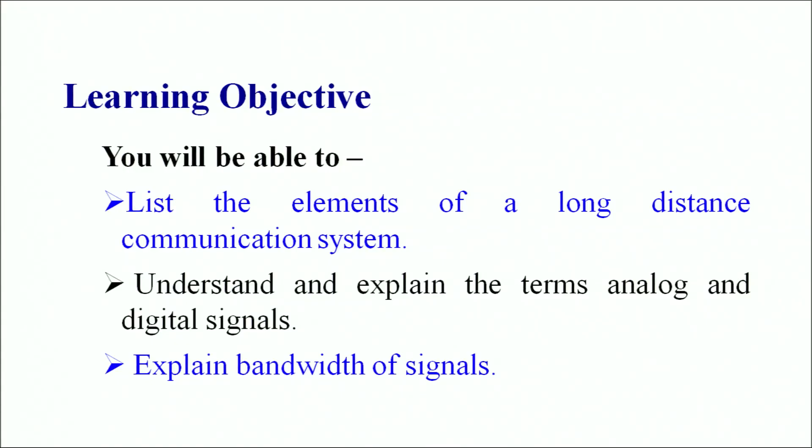In this particular chapter you will be able to list all the elements of a long distance communication system, understand and explain the terms analog and digital signals, and you will be able to explain the bandwidths of the signals.